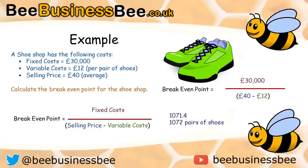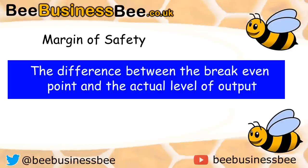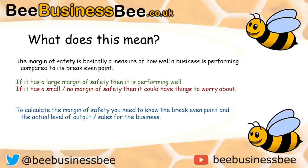Another key term is the margin of safety. It's the difference between the breakeven point and the actual level of output — the actual number of products that are sold. The margin of safety is basically a measure of how well a business is performing compared to its breakeven point. If a business has a large margin of safety then it's typically performing well because it's selling many more products than its breakeven point, and it must be making vast amounts of profit.